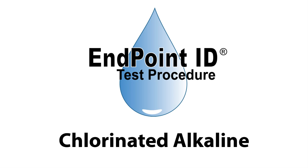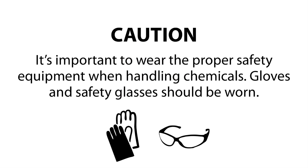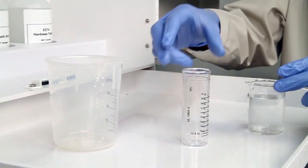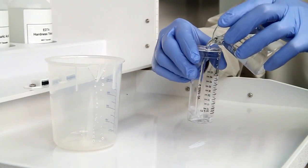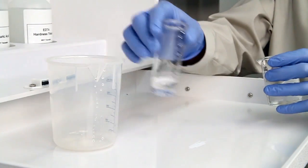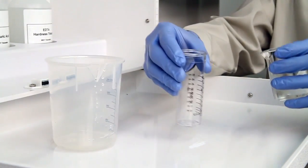This is a demonstration of a chlorinated alkaline drop count test kit using Endpoint ID procedures. The first step according to the Endpoint ID procedure is to collect an accurate sample. The smallest change in sample size will lead to inaccurate results.